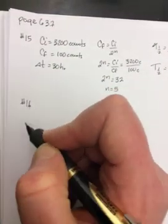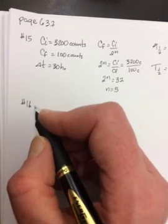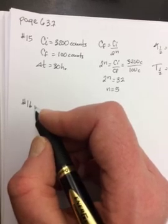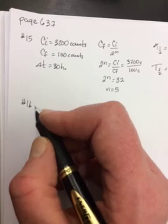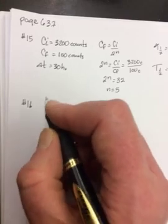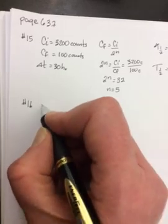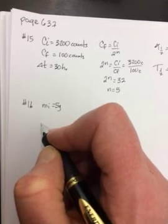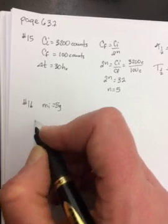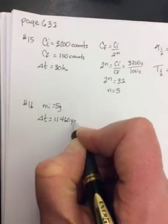Number 16 is the one that some of you said you had issues with. So a 14-gram sample of carbon-14 contains Avogadro's number 6.02 times 10 to the 23 atoms. Sorry, my book's too far away. I can't see the subscripts or superscripts. Okay, so that stuff, I'm going to come back. You don't need that yet. The part you need at the beginning is a 5-gram sample, so MI is 5 grams.